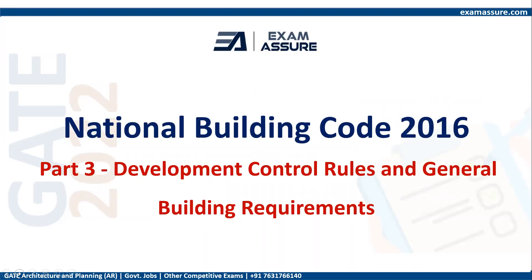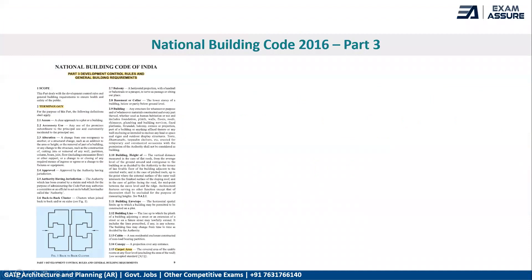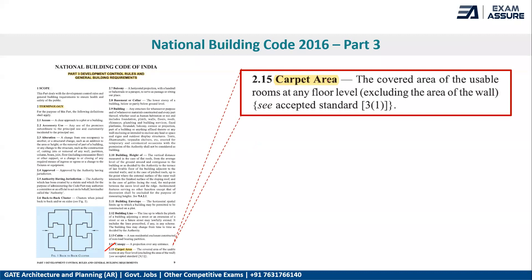Firstly, we will discuss Part 3 of the NBC which talks about the Development Control Rules and General Building Requirements. The most important thing from this section is going through the terminology. For example, let us take the example of carpet area.